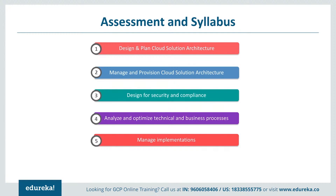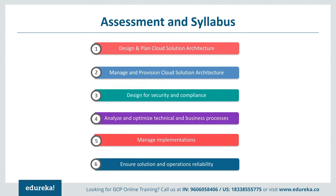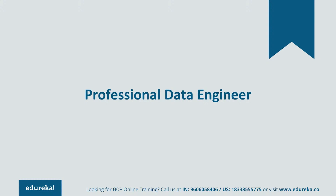Section 5 is managing implementation — advising development or operations teams to ensure successful development of solutions. This includes application development, testing frameworks, and data and system migration tools. The final section — Section 6 — covers ensuring solution and operations reliability, which includes monitoring, logging, and alerting, deployment and release management, supporting operations, and operation control measures.